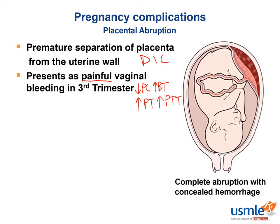Does anyone recall the mnemonic for DIC from the heme-onc section? We're back in the repro chapter and this O for obstetrics is what we're interested in.